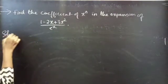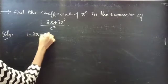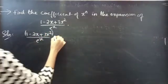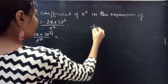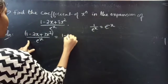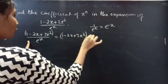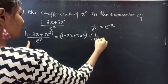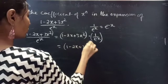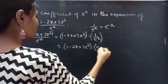We are given the expression (1 minus 2x plus 3x square) divided by e power x. Since 1 by e power x equals e power minus x, we can write this as 1 minus 2x plus 3x square into e power minus x.